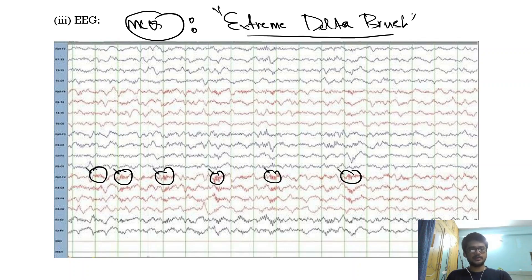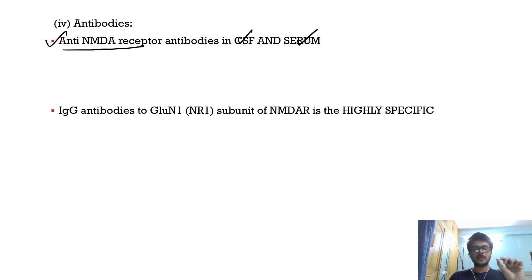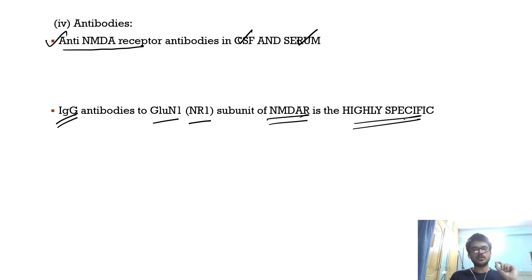Look for anti-NMDA receptor antibodies in both CSF and serum. The highly specific antibody is IgG antibodies to the GluN1 (NR1) subunit of the NMDA receptor — this is the most specific antibody for this condition.